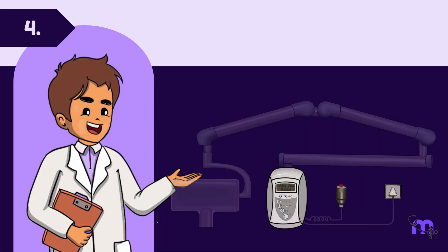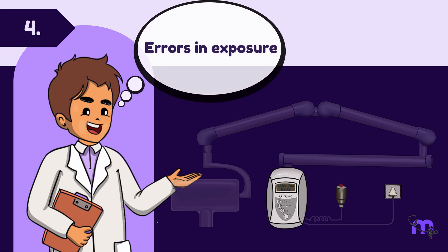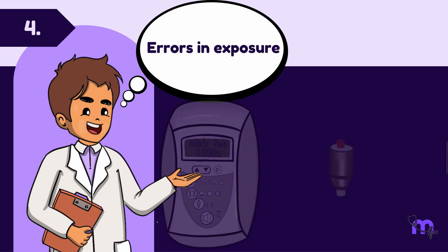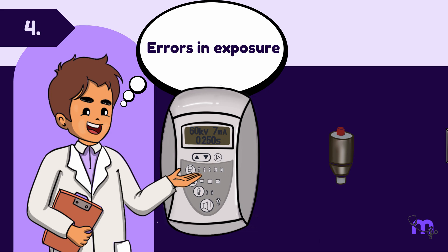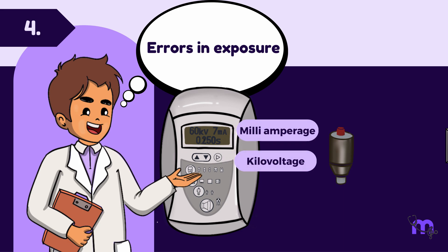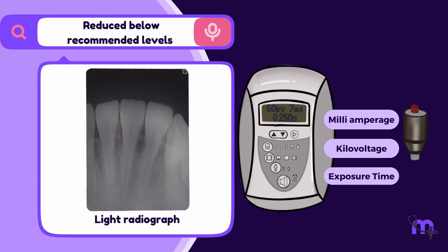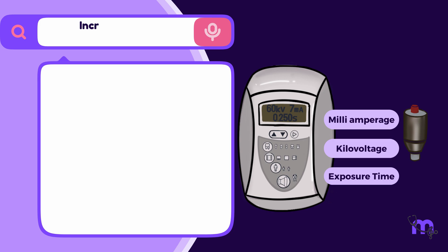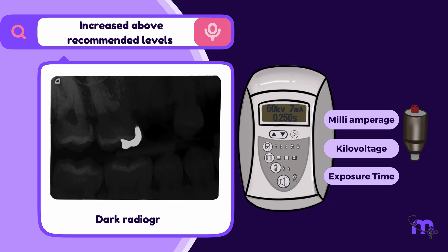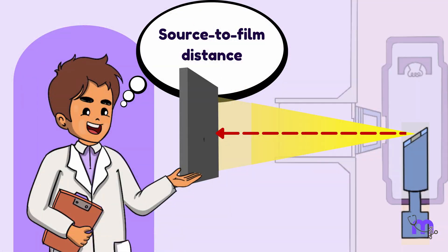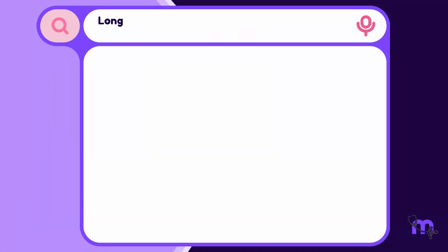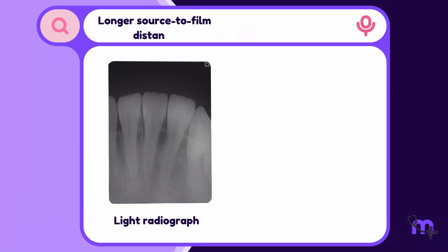After correctly positioning the PID, the patient is exposed. Exposure settings significantly impact the final radiograph. These settings include mA, kV peak, and exposure time. If these factors are all reduced below recommended levels, a light radiograph is produced. Conversely, increasing all three factors results in a darker image. The source-to-film distance also affects image density — a longer distance results in a lighter image, while a shorter distance produces a darker image.